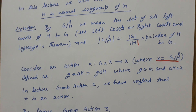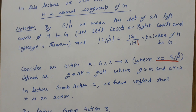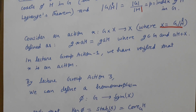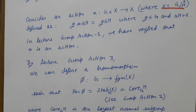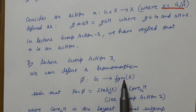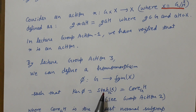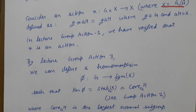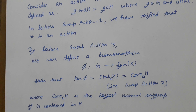Consider an action * : G × X → X defined by g * (aH) = (ga)H, where g ∈ G and aH ∈ X. We showed in Group Action 1 that this is indeed an action. In Group Action 3 we showed that any action of G on a set X defines a homomorphism φ: G → Sym(X). In Group Action 2 we showed that for this particular action, the kernel of φ equals the core of H in G, which is the largest normal subgroup of G contained in H.